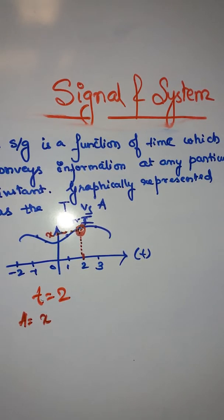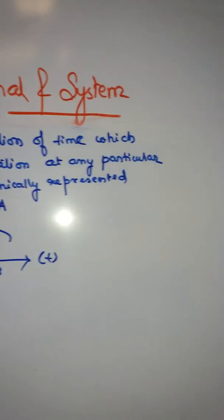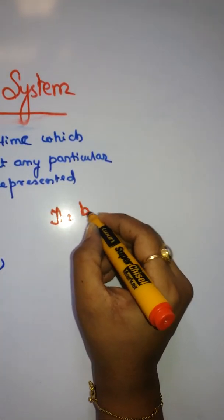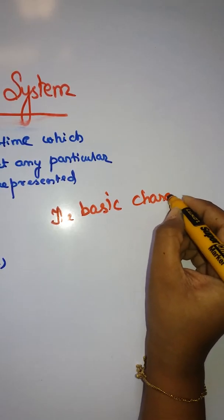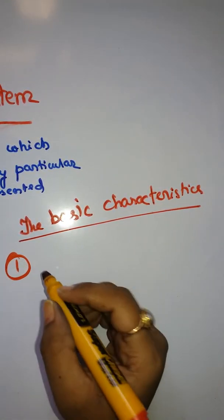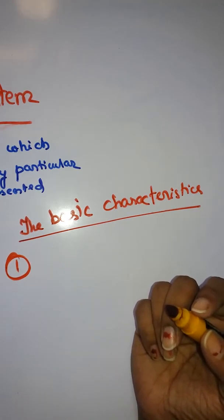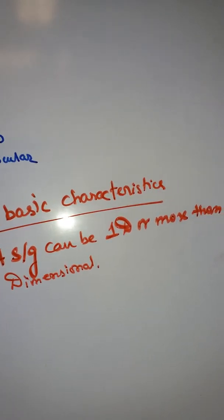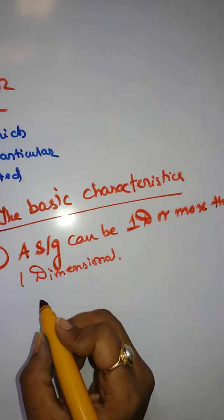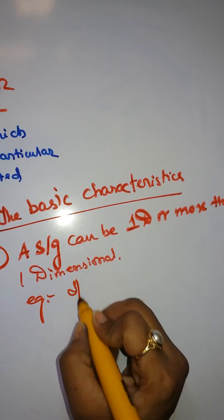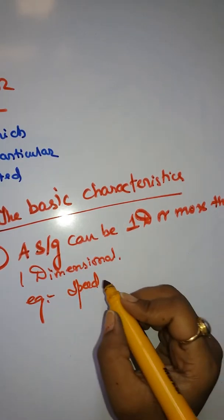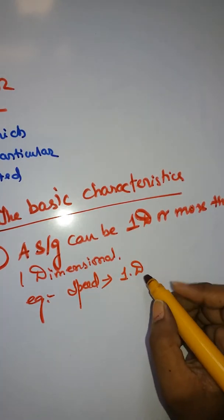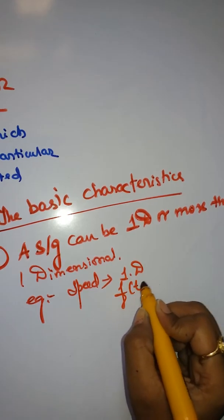Now what are the basic characteristics of a signal? A signal can be one-dimensional or more than one-dimensional. For example, speed is one-dimensional. It is basically a function, you can write f of t.